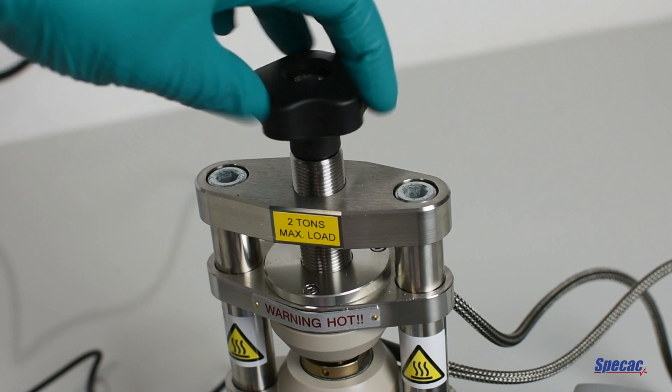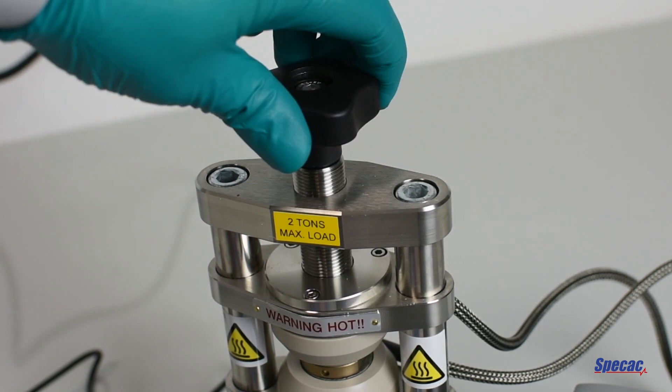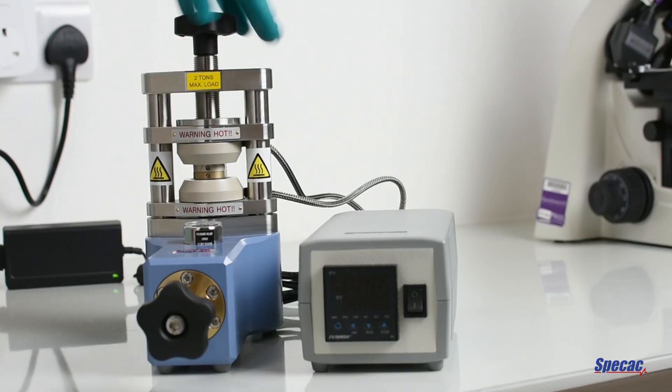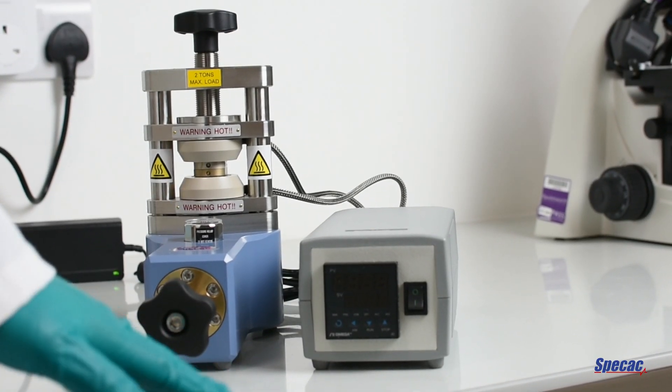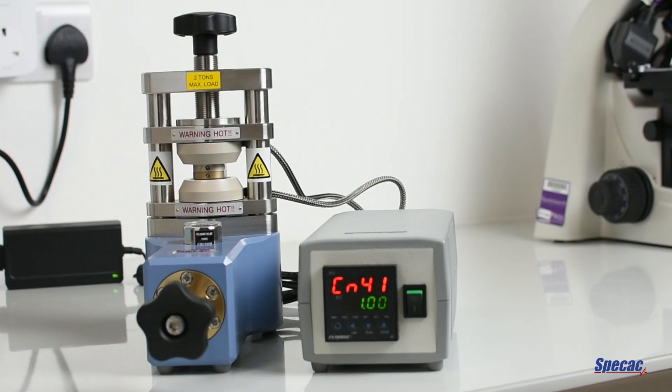The procedure begins by setting a temperature on the press. Before setting the temperature, ensure that the heated surfaces of the press are touching by rotating the lead screw until they meet. After the heated surfaces are brought together, flip the switch to turn on the temperature control.